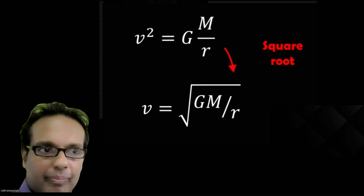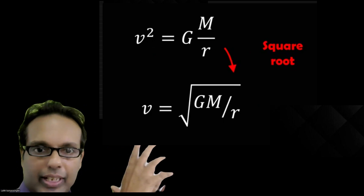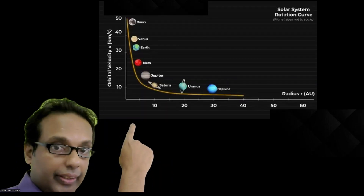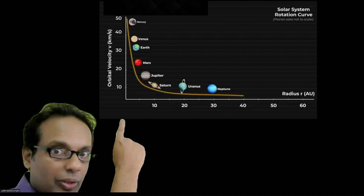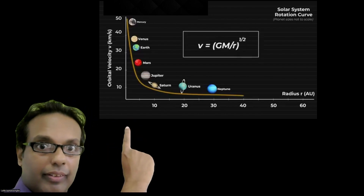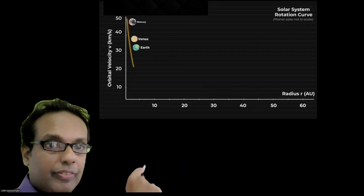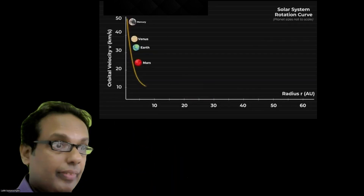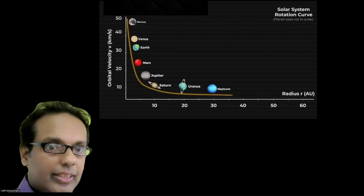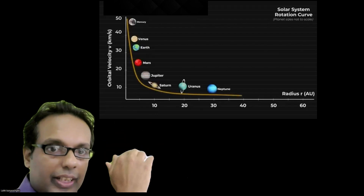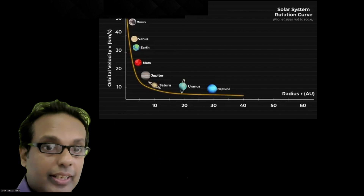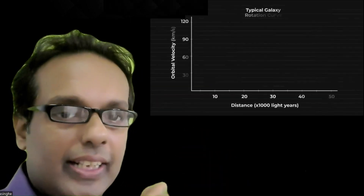So according to Newtonian mechanics, if there is a central mass like our Sun, when you go along the solar system further away from the center, when the radius of the planet increases, the rotational speed of the planet should decrease. This should be the same for the galaxy.